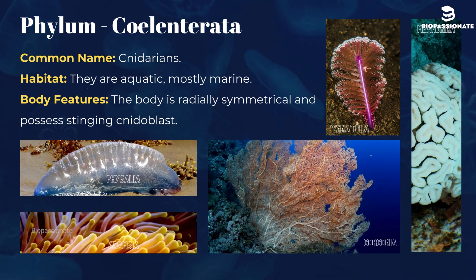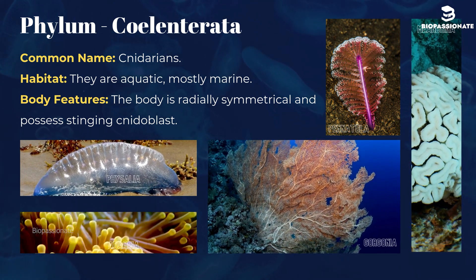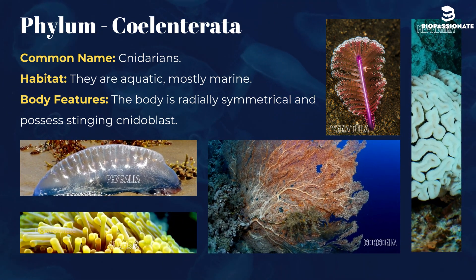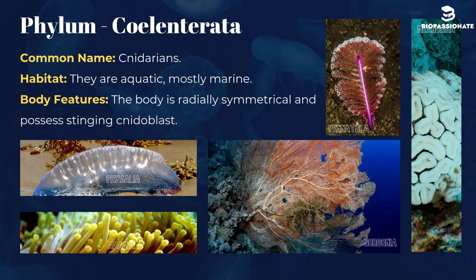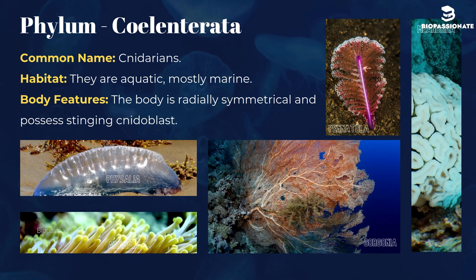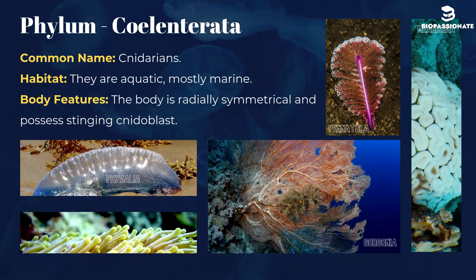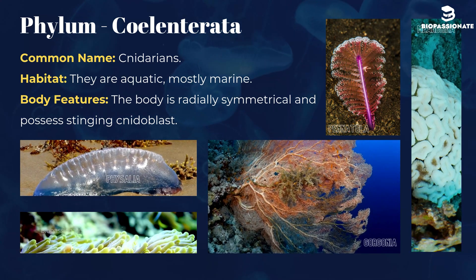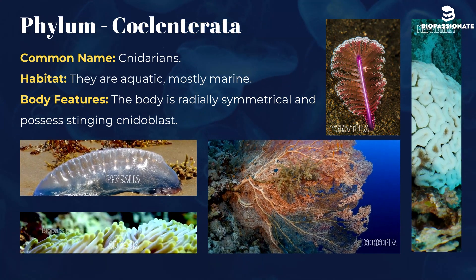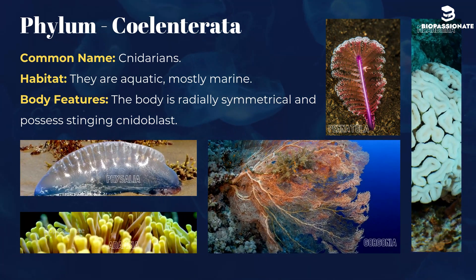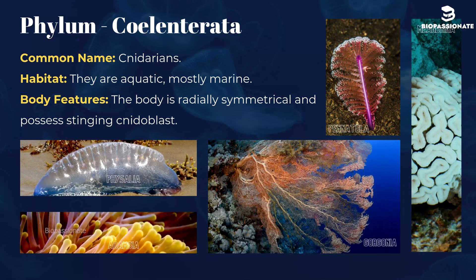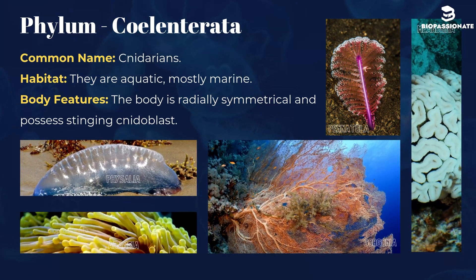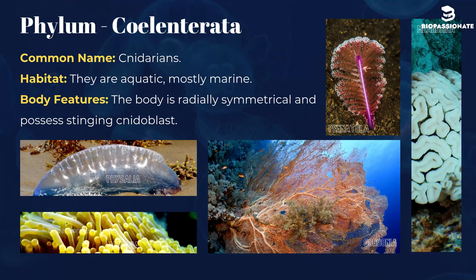Phylum Coelenterata, also known as Cnidarians. They are aquatic, mostly marine. The body is radially symmetrical and possesses stinging nematoblasts. Some common examples are Physalia (Portuguese man-of-war), Adamsia (sea anemone), Pennatula (sea pen), Gorgonia (sea fan), and Meandrina (brain coral).